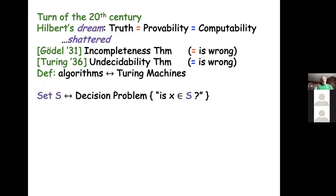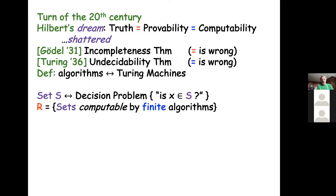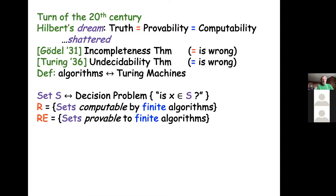I'll talk just about decision problems. Any set S — a set of numbers, sequences, or functions — can be thought of as a collection of problems: given an element, is it in the set or not? You may want to compute whether X is in S, or prove to someone that X is in S. Turing considered two families of sets: R, the class computable by finite algorithms which always halt, and RE, recursively enumerable sets — those verifiable by finite algorithms. His main theorem was that these two sets are different. In this general setting, proofs and computations are different.